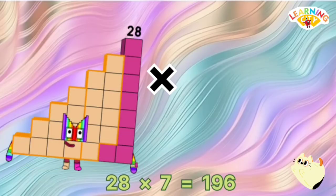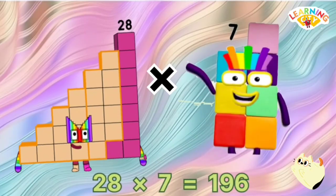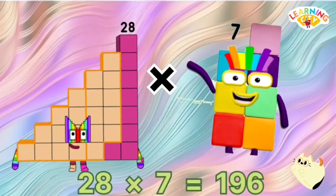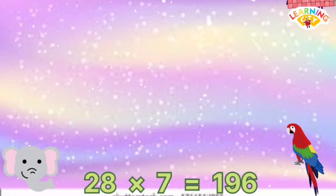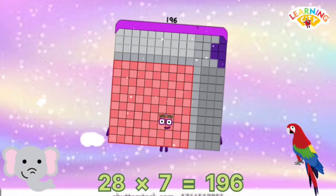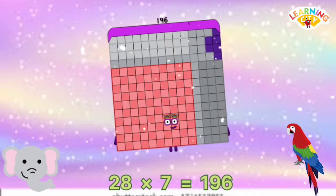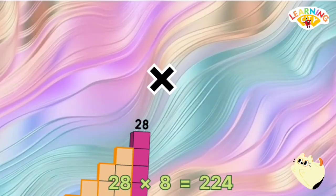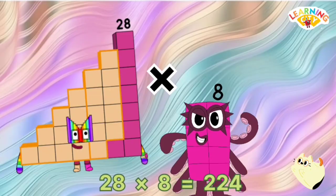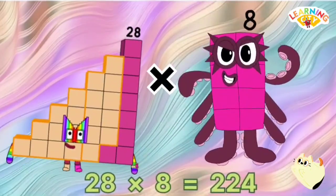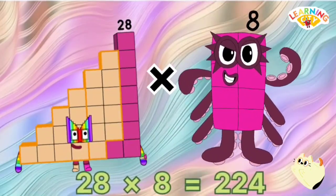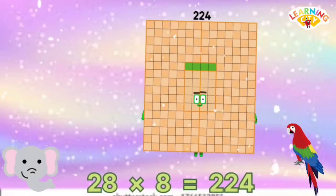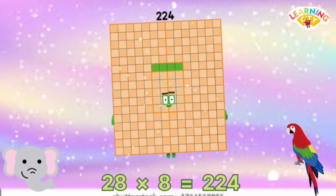28 multiply 7 is equals to 196. 28 multiply 8 is equals to 224. Amazing!